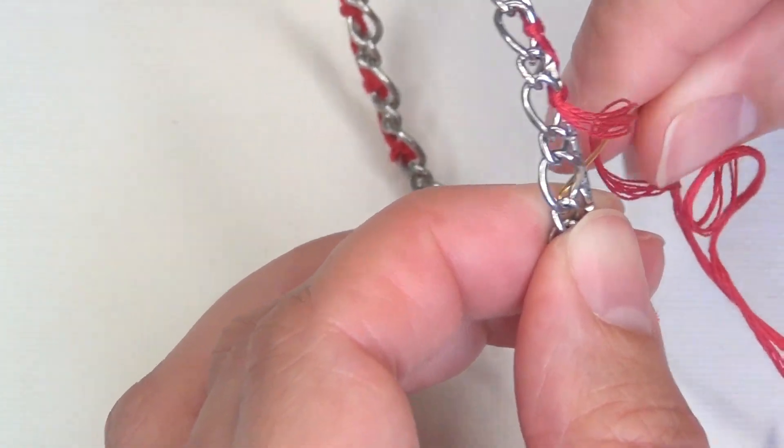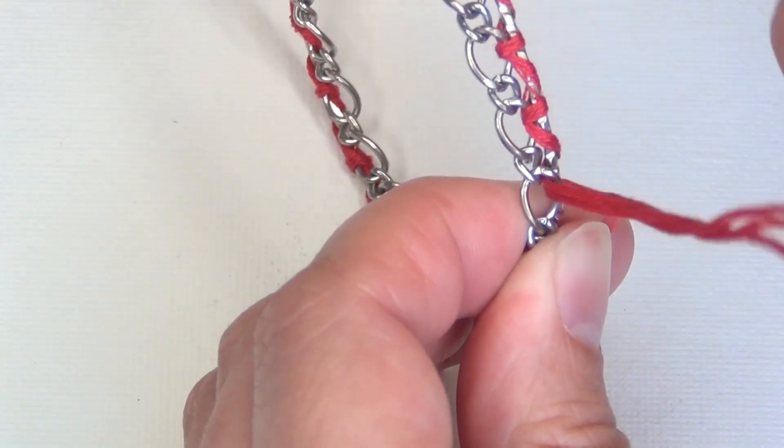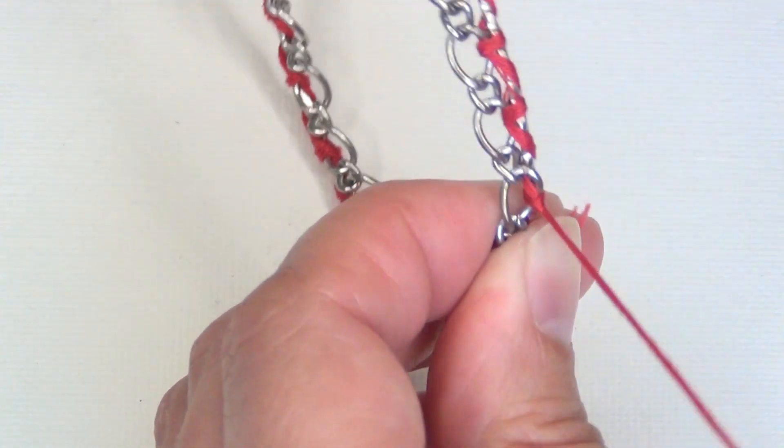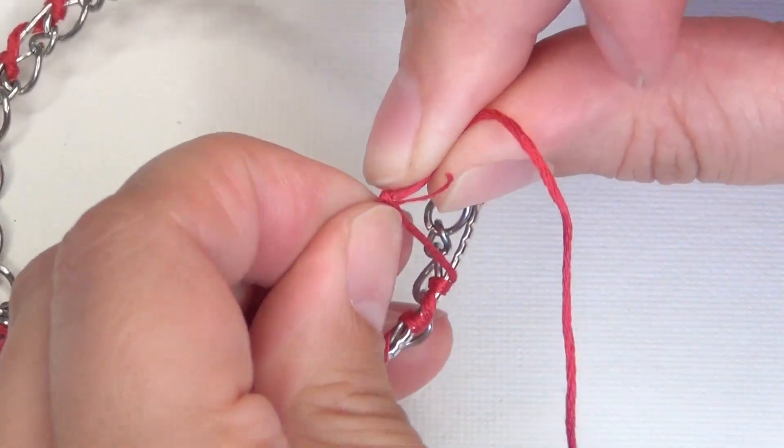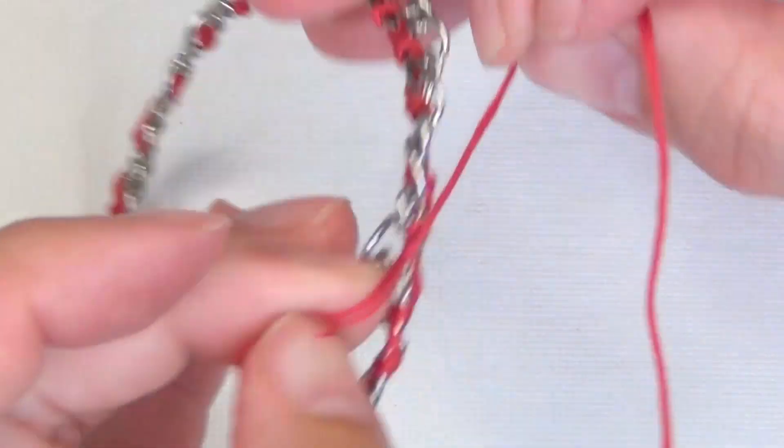Then continue stitching your embroidery thread until you get to the beginning of your embroidery thread and then simply tie it off in a knot. And that is one side of your bracelet finished.